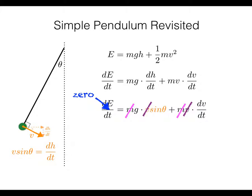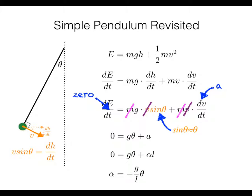For small angles, sine theta is approximately equal to theta. Also remembering that dv/dt equals a, we get zero equals g theta plus a. Since a equals alpha times l for a pendulum of length l, substituting alpha l for a and rearranging gives alpha equals minus g over l times theta. That's equivalent to a equals minus omega squared x, so omega squared equals g over l, from which you can find the familiar expression for the period of the simple pendulum.